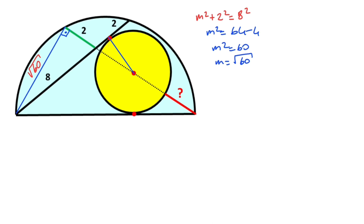Let's draw a perpendicular like this, and let's call this angle theta. This angle must also equal theta. Here I'm going to represent with alpha. Notice that alpha plus theta equals 90 degrees, which means here must equal alpha. Therefore this triangle and this triangle are similar, because they have the same angles. The ratio of similarity between these two triangles equals 2 over 8, which is 1 over 4. That means if there is an X unit here, this length must equal 4X.